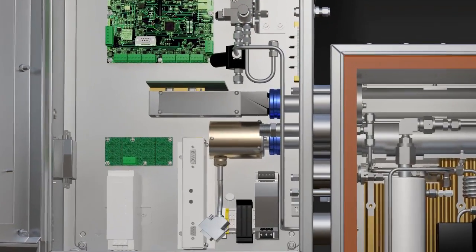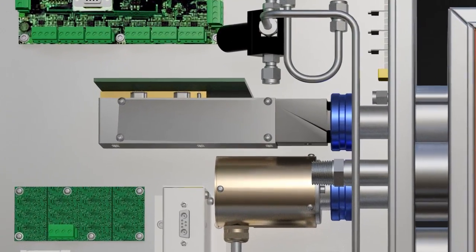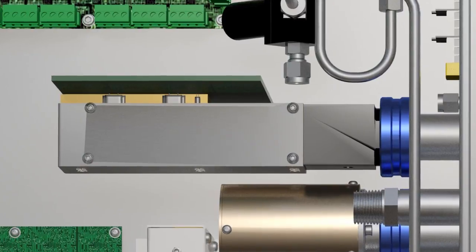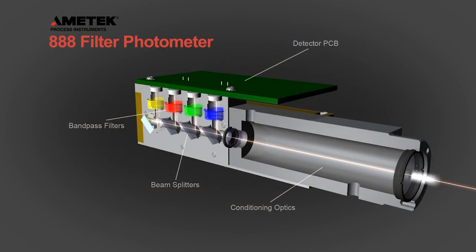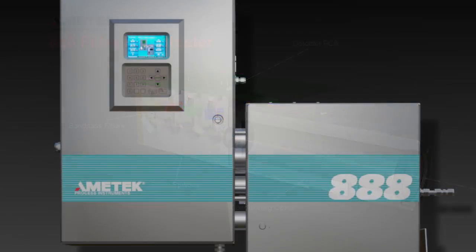The model 888, the successor to the model 880 NSL, uses field-proven and highly reliable UV technology to accurately monitor the hydrogen sulfide and sulfur dioxide concentrations in sulfur recovery tail gas.